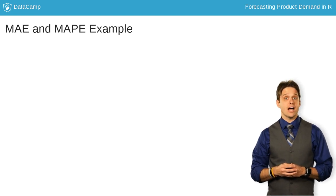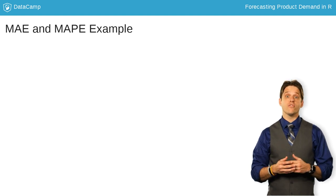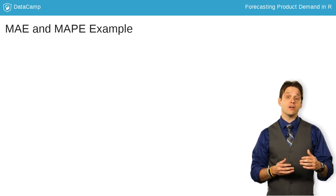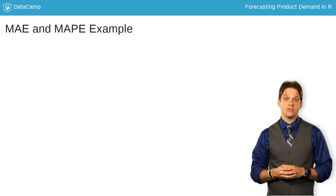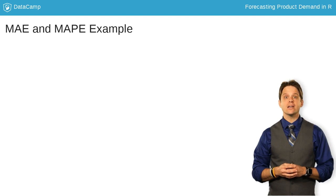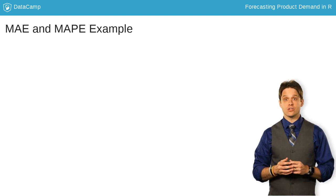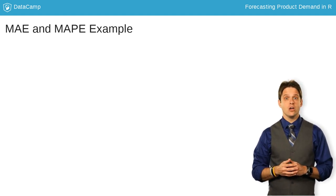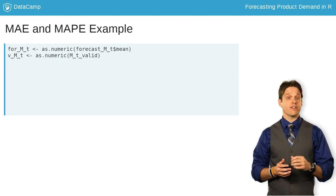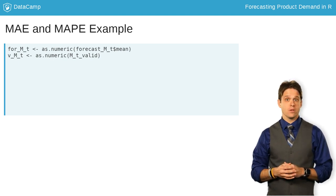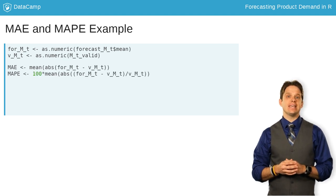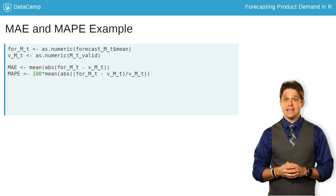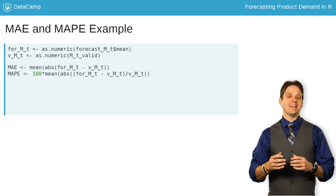The forecast object that we created for the mountain region, called forecast_M_T, has many components, not just the forecast. To get the forecast, we need to ask for the mean object with a dollar sign. To make it easier to compare the forecast with a validation data set, we also use the as.numeric functions. Once we do that, we can easily calculate both the MAE and MAPE. Let's see how we did.